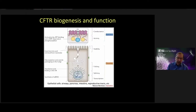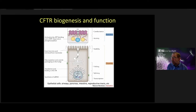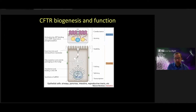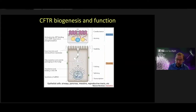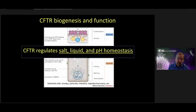Thinking about what CFTR does: it's expressed in epithelial cells and encoded on chromosome 7. The messenger RNA is translated into a polypeptide, and as it makes its way through the ER and the Golgi, it gets further processed to the cell surface to serve as an anion channel involved in chloride and bicarbonate secretion or absorption. CFTR regulates salt, liquid, and pH homeostasis in those organs.